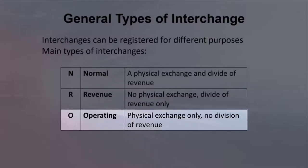At an operating-only interchange point, cars are physically exchanged, but revenue is not divided. This is the opposite of the revenue-only interchange. Carriers may find it advantageous to exchange cars at a new point. However, the freight contracts require revenue division over another interchange point. An operating-only interchange can be registered to accommodate these situations.